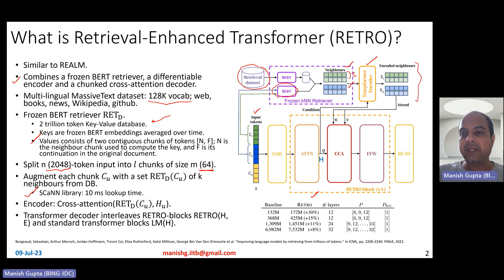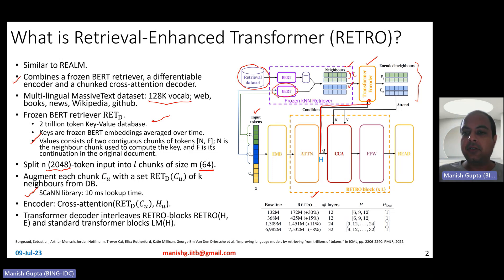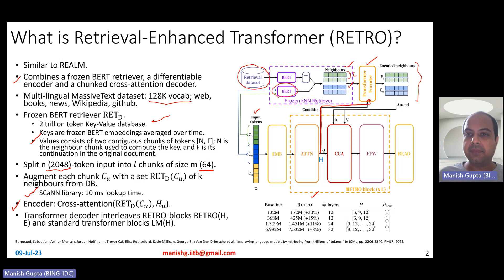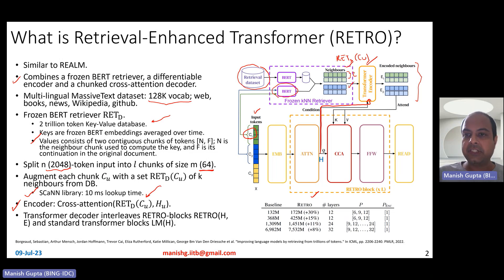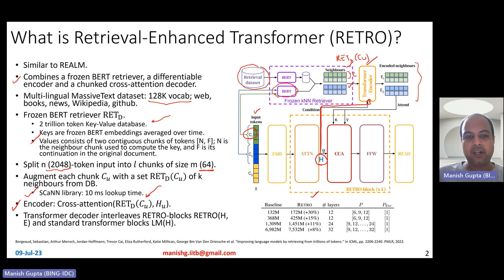These neighbors are passed through the transformer encoder to get their transformed representations. This encoder is small — maybe one or two transformer encoder layers — but it has cross-attention. This transformer encoder doesn't just take the neighbors; it's also conditioned on the attentional output from the decoder, incorporating extra information coming from the decoder side. So the encoder is essentially a cross-attention encoder, computing cross-attention of the retrieved documents for a particular chunk, also with cross-attention with respect to the output coming from the RETRO block of the decoder.